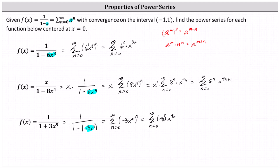We have a negative number raised to a power. It's very common to rewrite this as negative one to the power of n times three to the power of n. The final power series is the sum from n equals zero to infinity of negative one to the power of n times three to the power of n times x to the power of nine n. I hope you found this helpful.